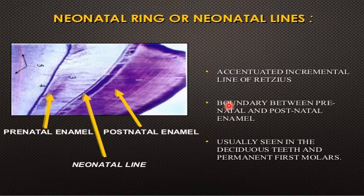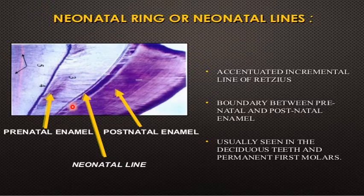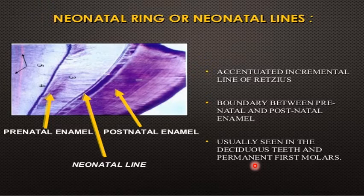The third incremental line present in the enamel is the neonatal line. This line lies between the prenatal enamel and postnatal enamel, representing an accentuated incremental line of Retzius occurring during birth. It forms the boundary between prenatal and postnatal enamel and is usually seen in deciduous teeth and the permanent first molar. It occurs due to variation in environment and nutrition, and this line is also seen inside the dentin.